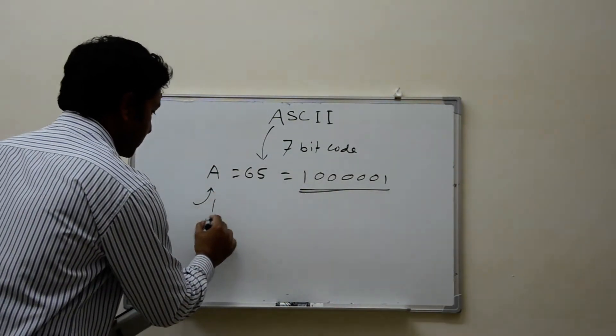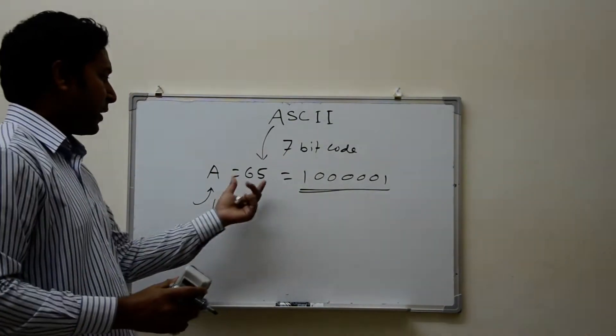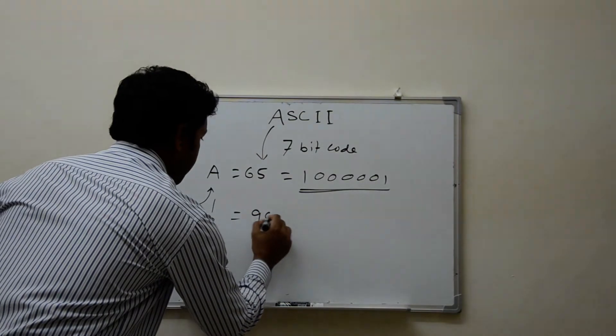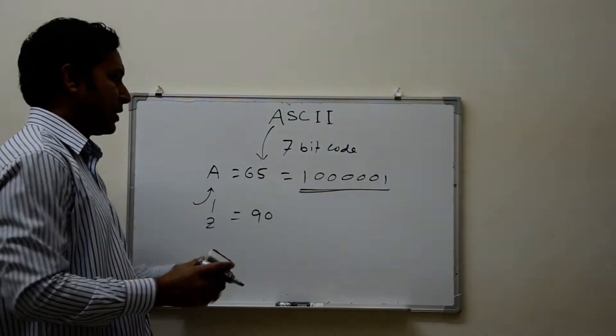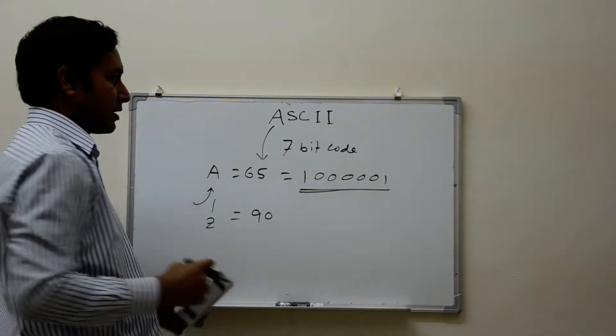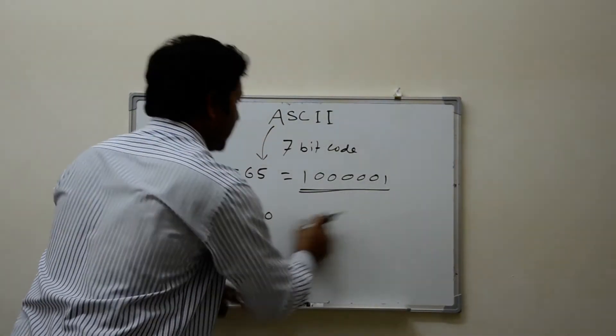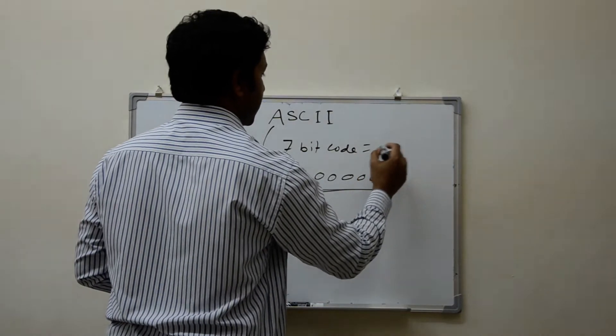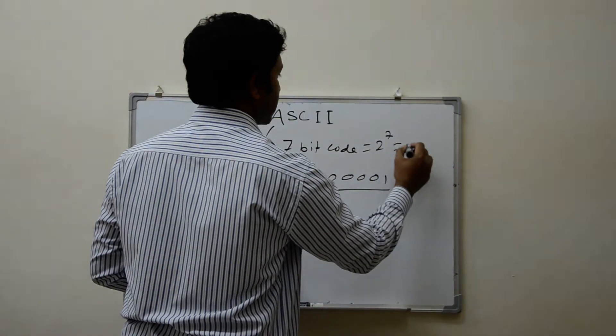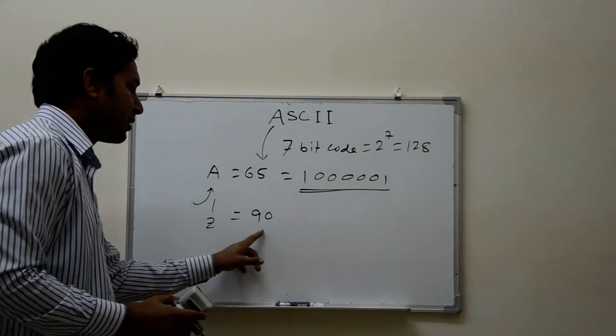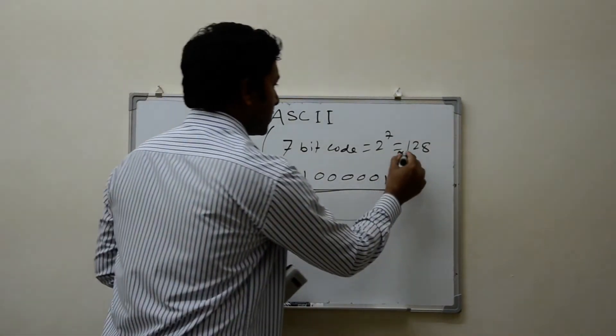Any character that is there in the computer, like A to Z, 65 is A. If you think about Z, the ASCII value of this one is 90. So let's cover with 7 bit. It's 7 bit code is equal to 2 to the power 7 is equal to 128 characters. So if it is Z, 90, it belongs to this.